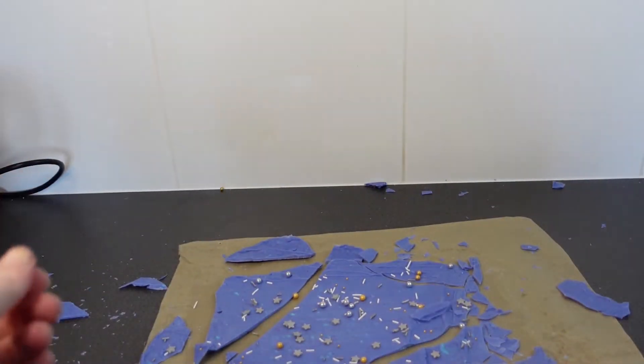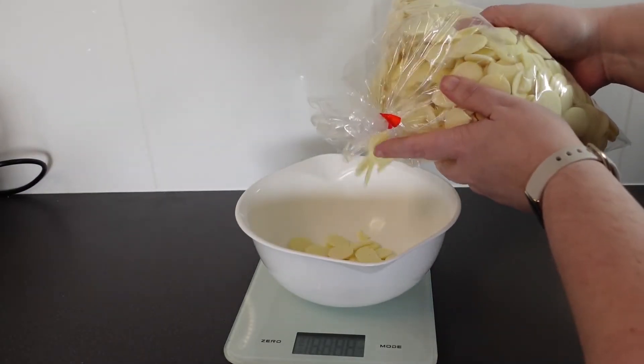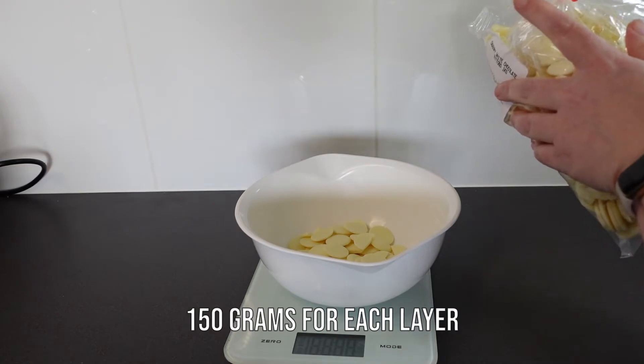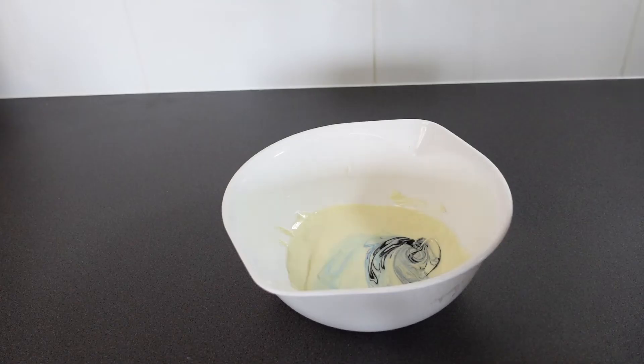Anyway let's ignore this nightmare and move on to the actual Halloween bark. So for each layer we're going to use white chocolate. For the first two layers we're going to use 150 grams and then for the third layer where we're using some decoration we're going to use 100 grams.